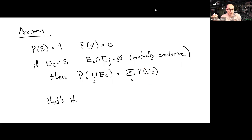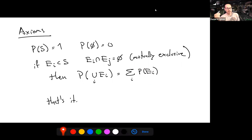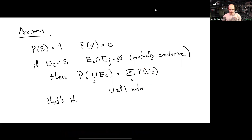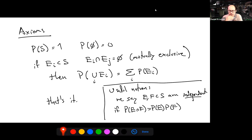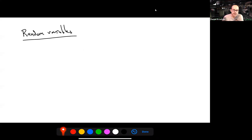Those are the axioms — that's what we need to be doing probability. A useful concept is independence: two subsets are independent if the probability of them both occurring is the product of the probabilities of each one occurring individually.